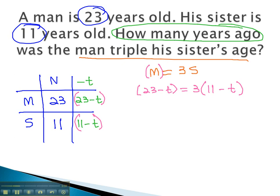We can quickly solve this equation, first by distributing through the parentheses. This gives us 23 minus t equals 33 minus 3t. Moving the variables all to one side, we add 3t to both.